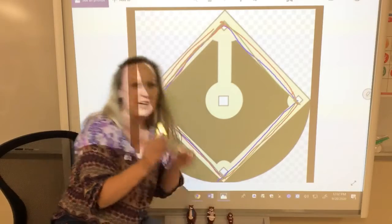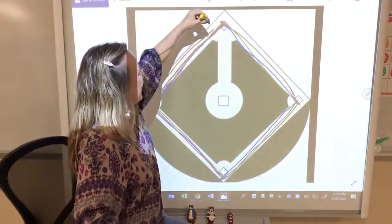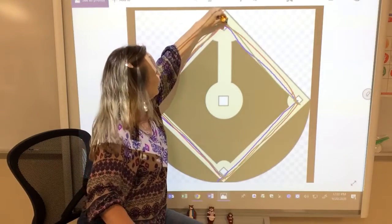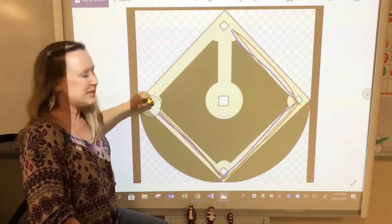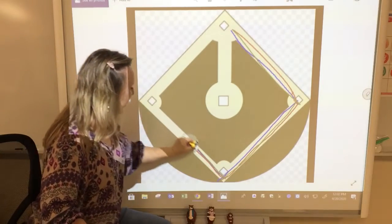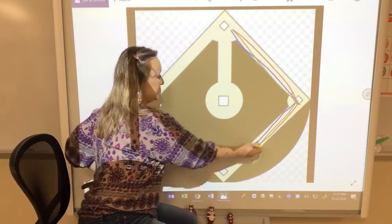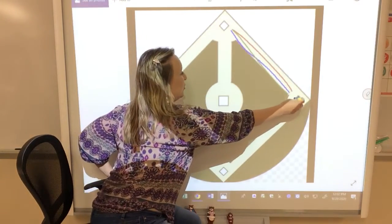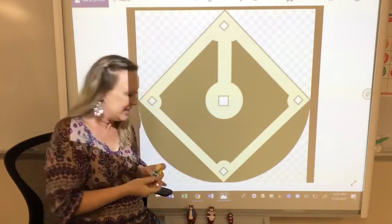All right, it's Goldilocks' turn. What do you think she's gonna do? She's gonna start at home rhombus. She's gonna run to first rhombus. Run to second rhombus. Run to third rhombus. Go up back home. Oh, she erased the lines.